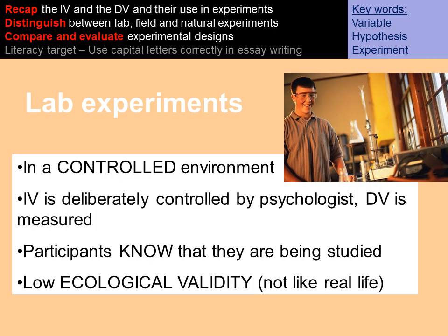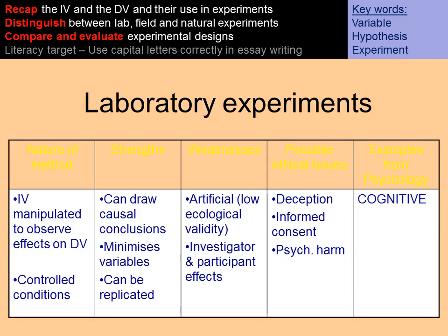In a lab experiment, the keywords you need to include are: artificial controlled environment. The DV is deliberately measured and the IV is manipulated to see if it has an effect on the DV. Participants will know that they're being studied, and because of that it has low ecological validity. In terms of strengths and weaknesses, lab experiments help us draw causal conclusions — a cause and effect relationship between the IV and the DV. They allow us to control extraneous or confounding variables, making them often very reliable and replicable. However, they are artificial and lack ecological validity because they're not like a real-life setting.